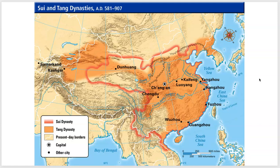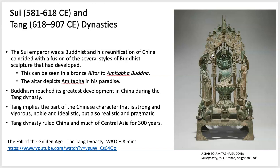During the Sui and Tang dynasties you can start to see their territories growing and China really expanding. The artwork became a lot more elaborate; the tools artisans had access to enabled a lot of detail in the fine qualities of drapery, fabrics, and patterns. There was strong realistic gesturing in the artists' techniques and crafts during this period.